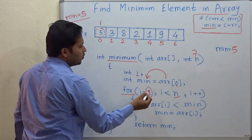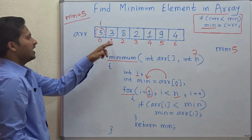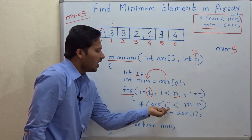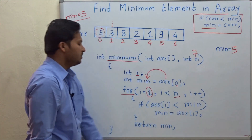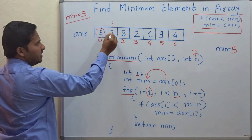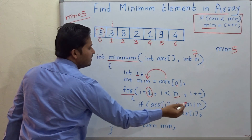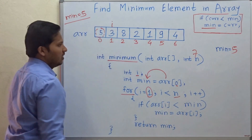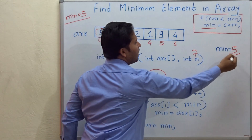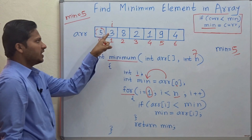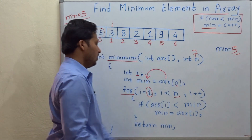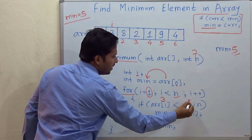For i equal to 1, i will be 1 now. If array of i is less than minimum — means you have to check whether the current element is less than the minimum variable. This minimum variable is holding the value 5 now. So you have to check whether the current element 3 is less than 5. Here, 3 is less than 5.